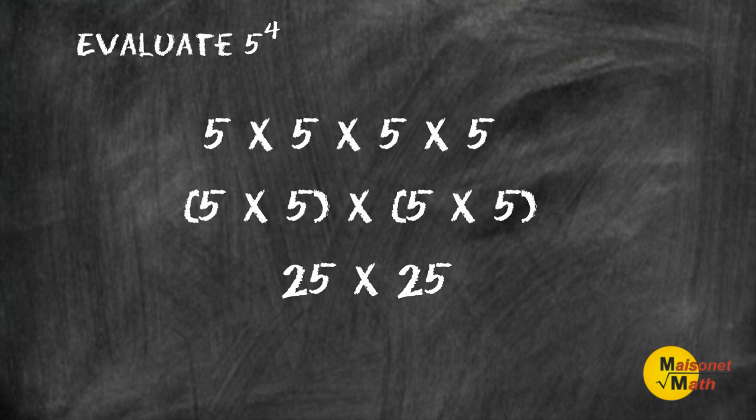Now we must multiply 25 × 25, which is 625. So now you should know how to evaluate basic exponential expressions, as well as write those expressions in expanded form.